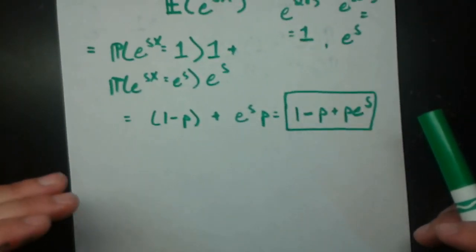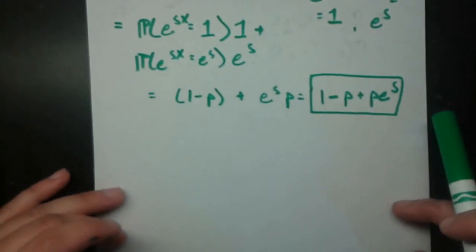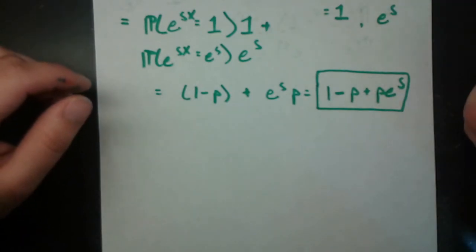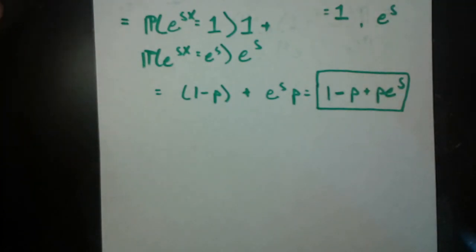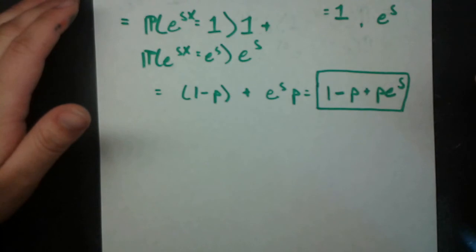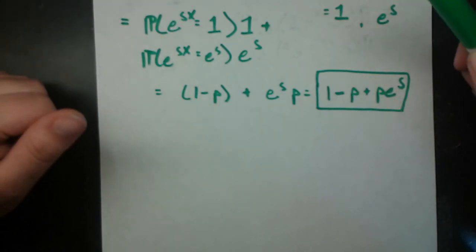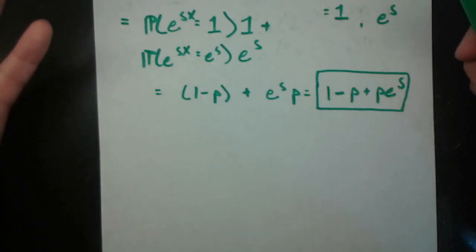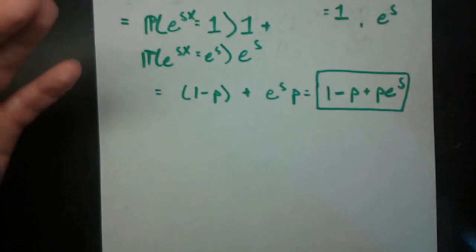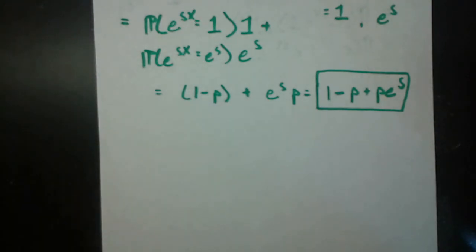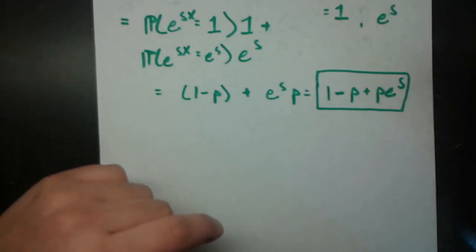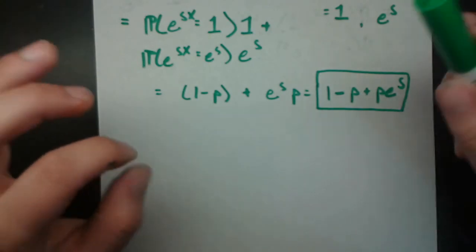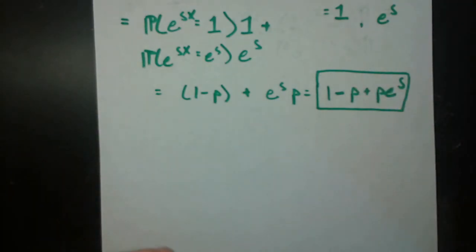The last thing to mention is how this relates to future topics. Although this may seem like a boring random variable, it will prove very important. In the next video, we'll talk about the binomial random variable and how to find its mean and variance very quickly using the fact that a binomial is the sum of independent Bernoullis.